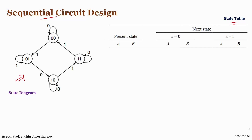Here we can see that the state is defined by two bits, so let those be A and B. The present state is zero-zero, and there is only one bit for input. When X equals zero, the state changes from 00 to 00. When input X is one, the state changes from 00 to 01.